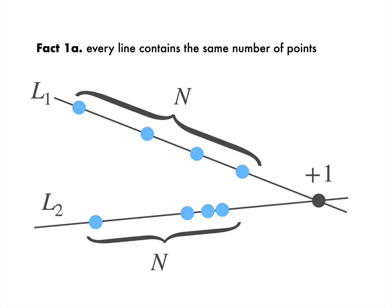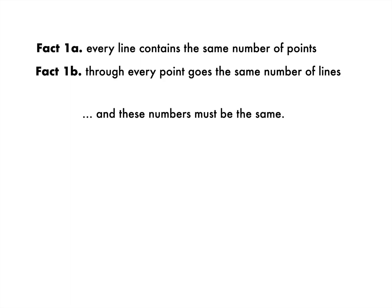Let's say n+1 of them to keep in tune with what we just did. This leads us to the second fact: through every point goes the same number of lines. Remarkably, this number is the same as the number of points per line. In other words, n+1.